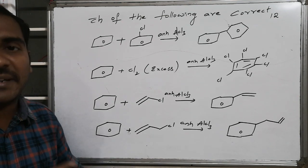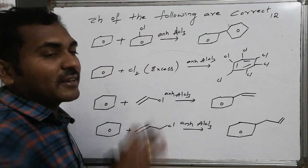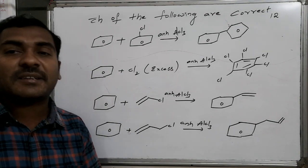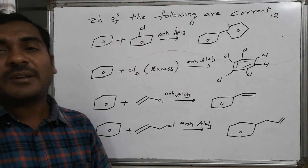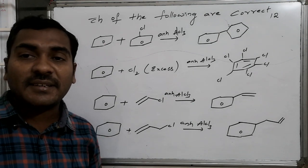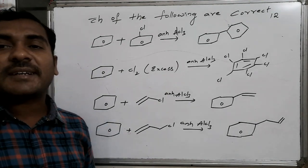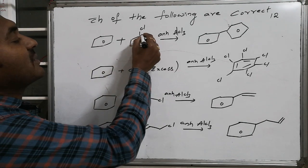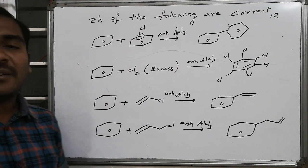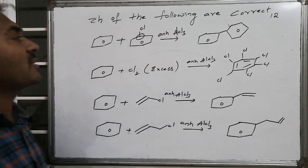For option 1, anhydrous AlCl₃ can generate a stable carbocation. Generally, the generated carbocation can be primary, secondary, tertiary, or sp3 in nature — not sp2, not sp. But here, this carbon is sp2, so generation of a carbocation becomes difficult — in fact, it is not possible with anhydrous AlCl₃.